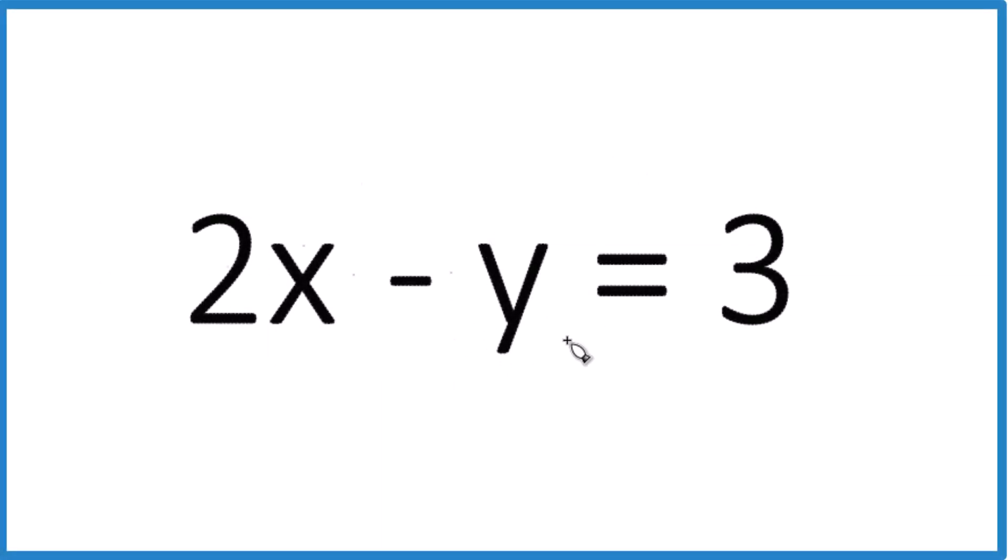I was asked to solve for y in this equation here. We have 2x minus y equals 3, so we want to get y all by itself.